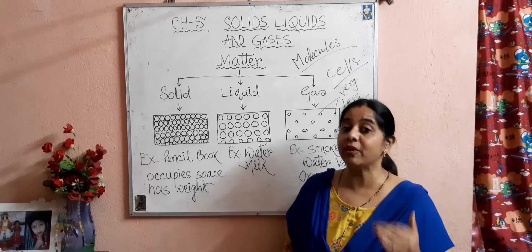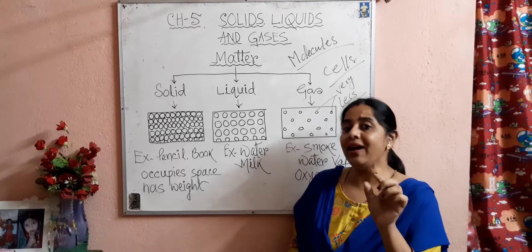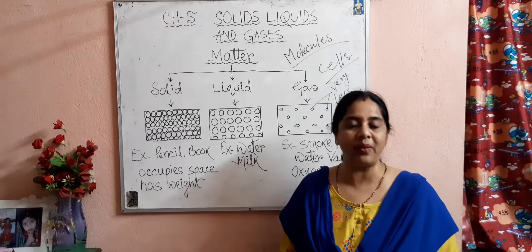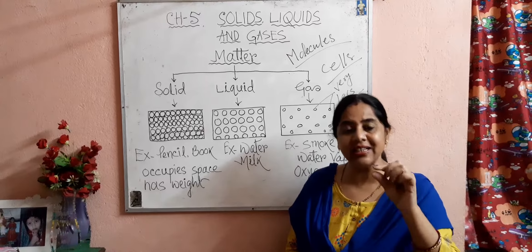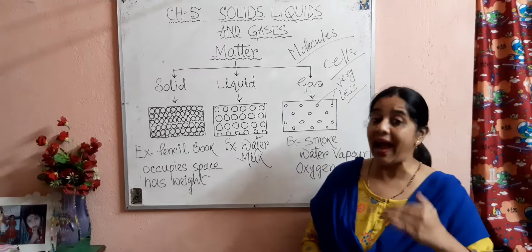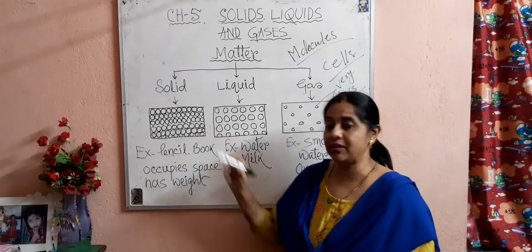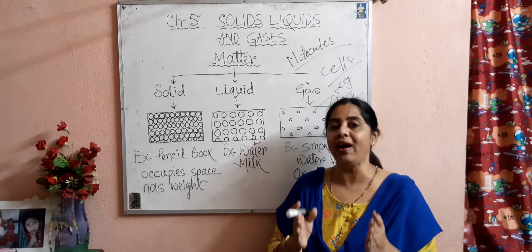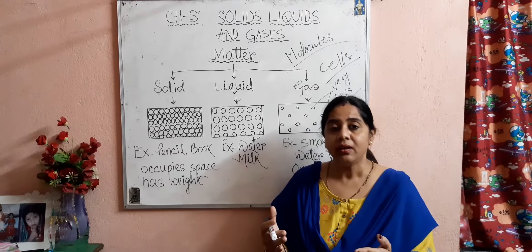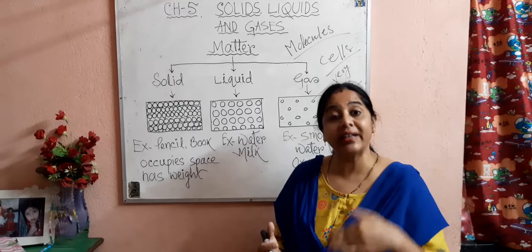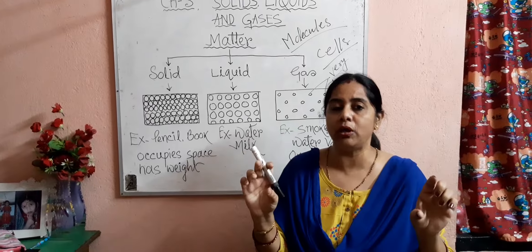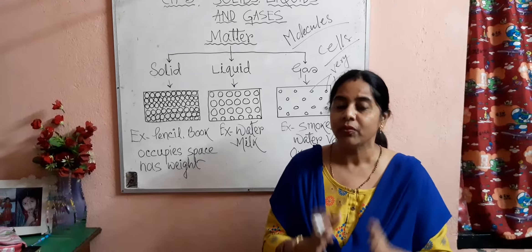So, the molecules in a solid matter are very closely packed. The molecules in a liquid matter are less closely packed. And the molecules in a gaseous matter are very loosely packed. Today I gave you a small idea about matter and the different states and forms of matter. The small particles of which matter is made are known as molecules, and the arrangement of molecules decides the form — or state — of matter: whether it is solid, liquid, or gas.